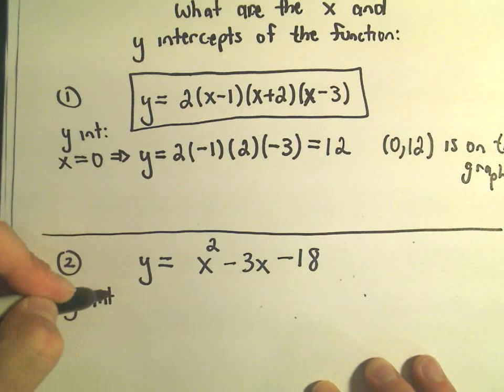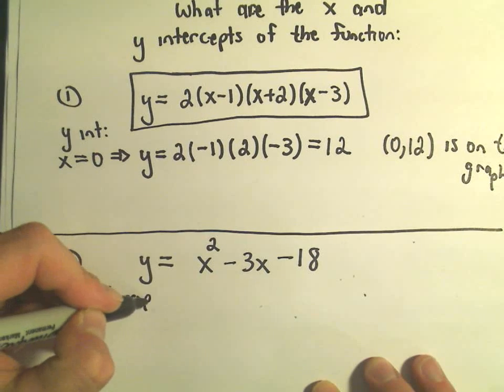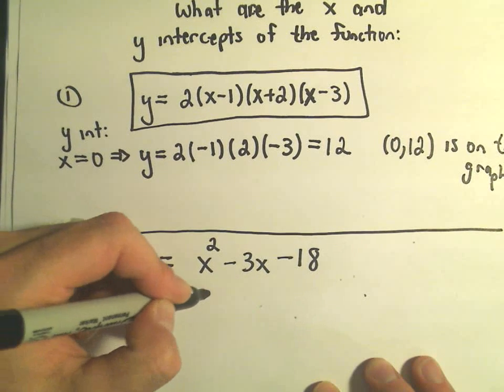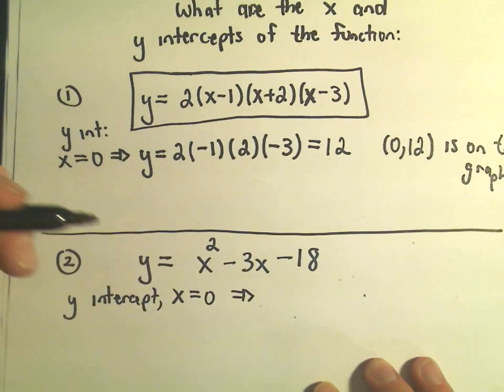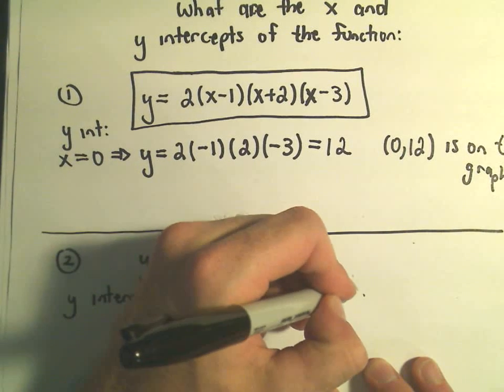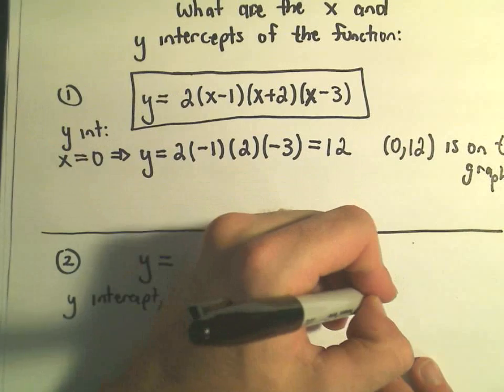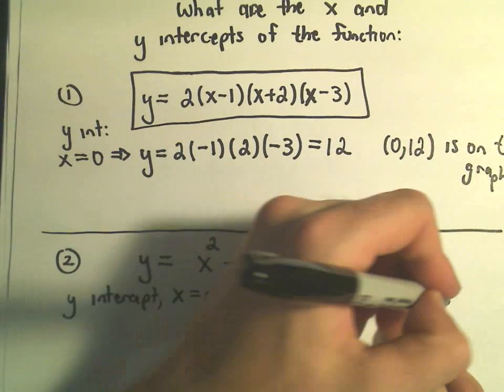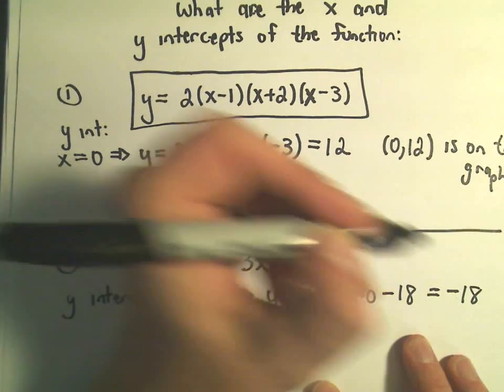And again the idea is to find the y intercept, we simply let x equal zero, and we just do the arithmetic, so we would get y equals 0 squared minus 3 times 0 minus 18, which just simplifies to negative 18.